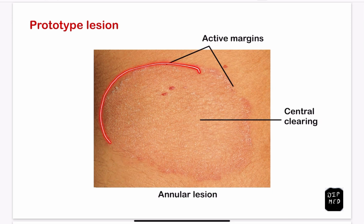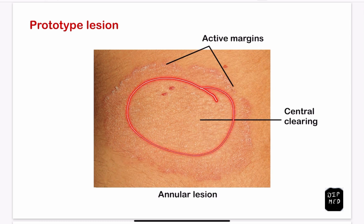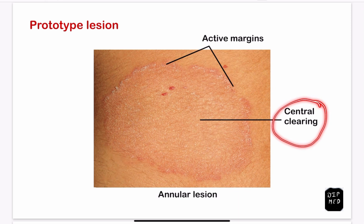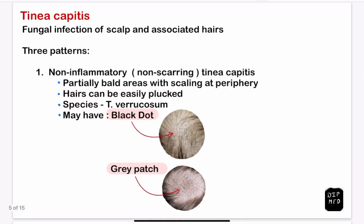This is a prototype lesion of dermatophytosis. Here you can see an annular or circular lesion with active margins. The margins can include vesicles, papules, pustules, and even scales, whereas the central area is relatively clear — this is called central clearing. In cases of chronic disease, there can be nodules, hyperpigmentation, or even lichenification in the center.